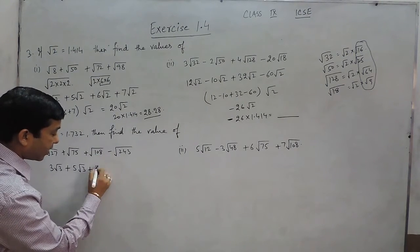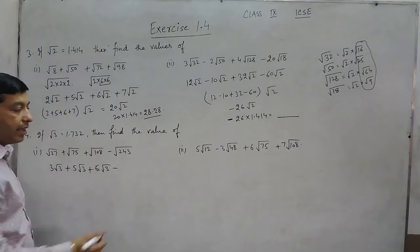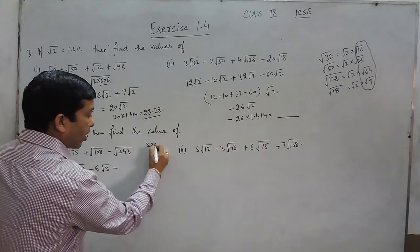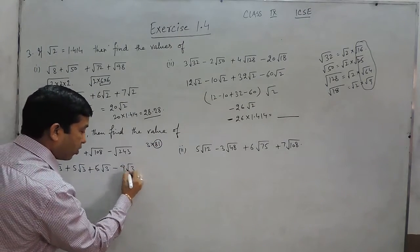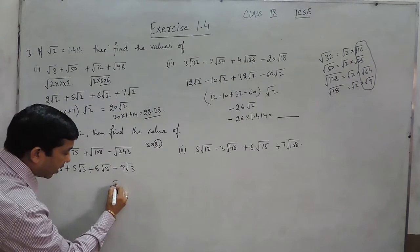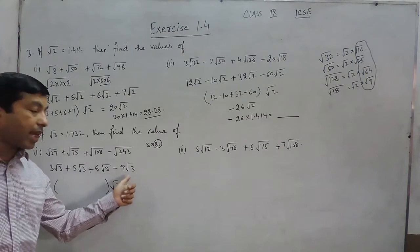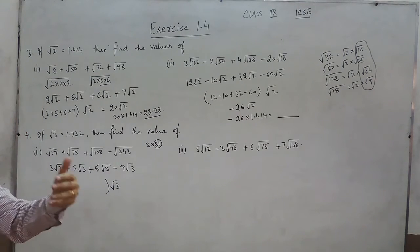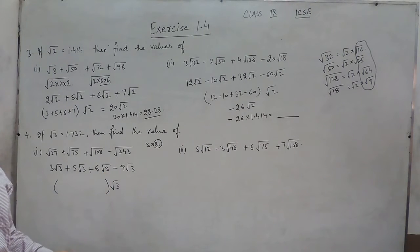-243 can be written as 3 × 81, where this is a perfect square, so it is 9√3. Now we can take √3 common. Keep something in mind: if all the terms have √3, then only we can take something common. If this is instead of √3 it is √5 or √6, then we cannot take common.